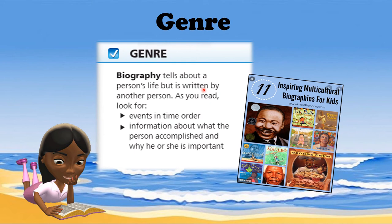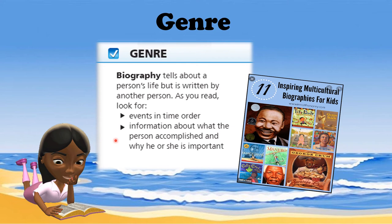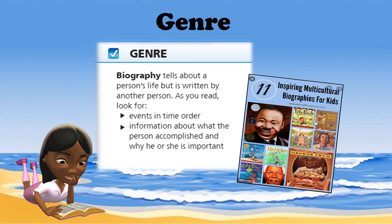The genre of James Fortin is biography. A biography tells about a person's life but is written by another person. As you read, look for events in time order and information about what the person accomplished and why he or she is important. For a biography to be written about you, you must have contributed to society and changed it in a certain way. Examples include inspiring biographies of Martin Luther King Jr., Barack Obama, and Nelson Mandela. Just type in 'biography for kids' and different titles will appear.